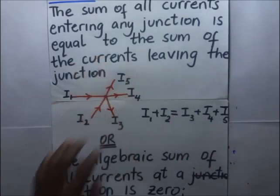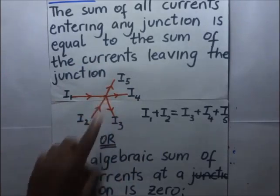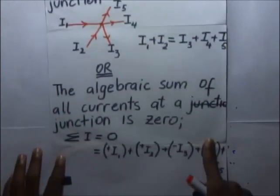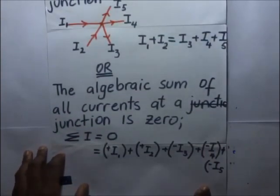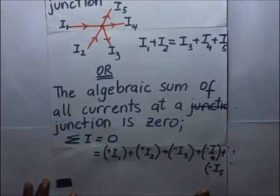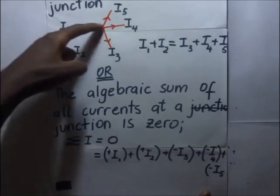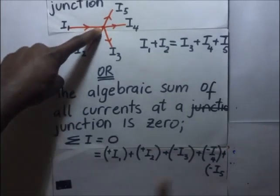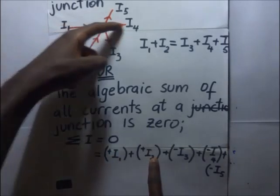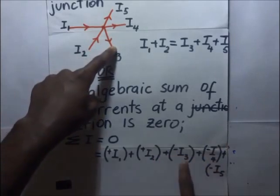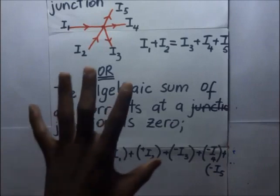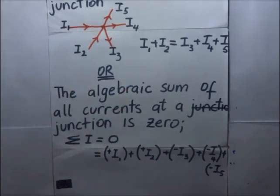That is just one version of that law. Still looking at that same junction, we can also describe this law as: the algebraic sum of all the currents at that junction is equal to zero. The currents entering the junction are positive — positive I1 and positive I2 — and the currents leaving the junction are negative. So the algebraic sum of all these currents equals zero. That is the first law of Kirchhoff.